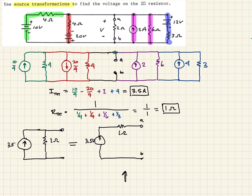Now we can add back our load resistor of 2 ohms between the two terminals. They want to know what the voltage is going to be across that. We'll say there's a current I circulating here, so the current equals voltage over resistance: that's 3.5 volts over 3 ohms total.